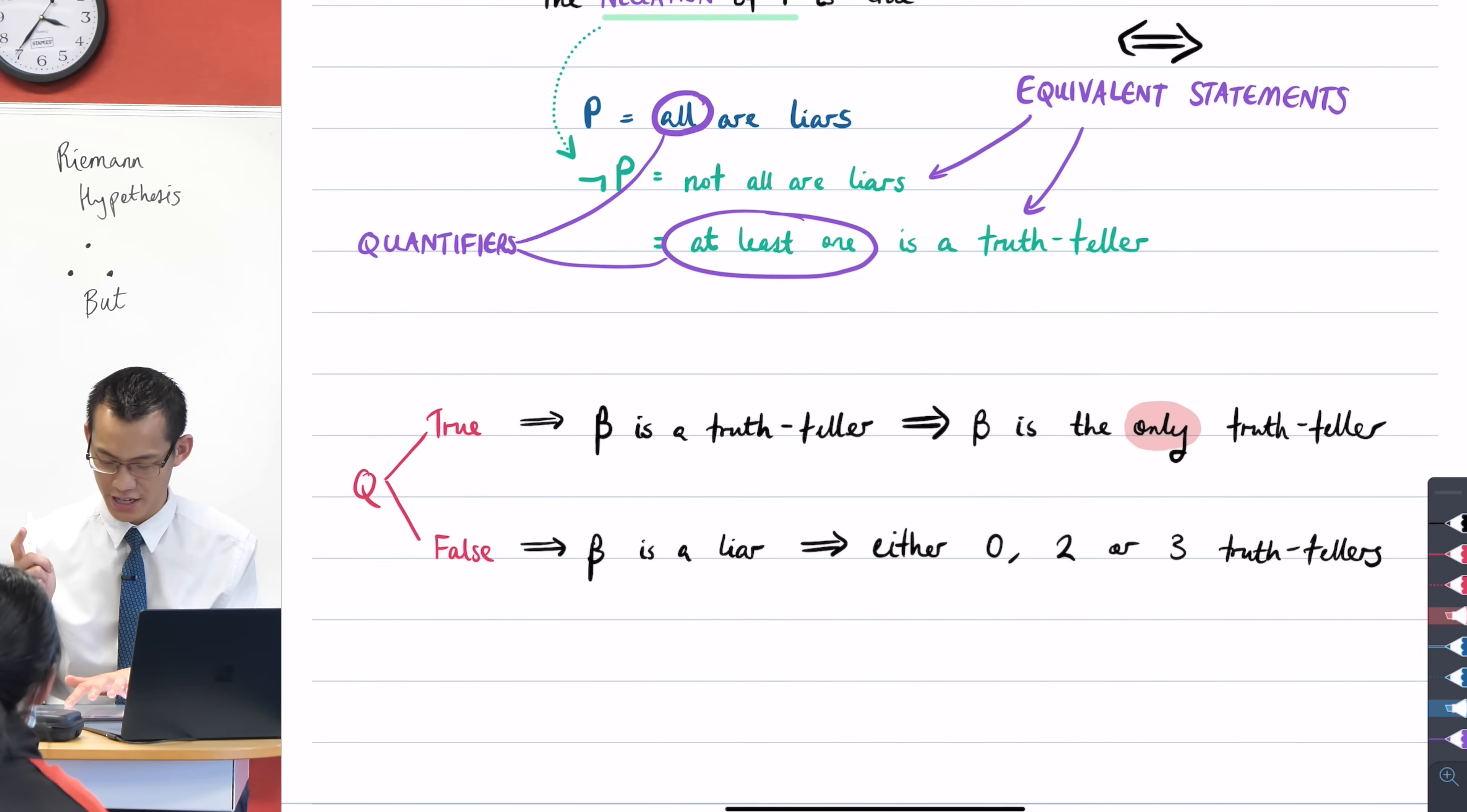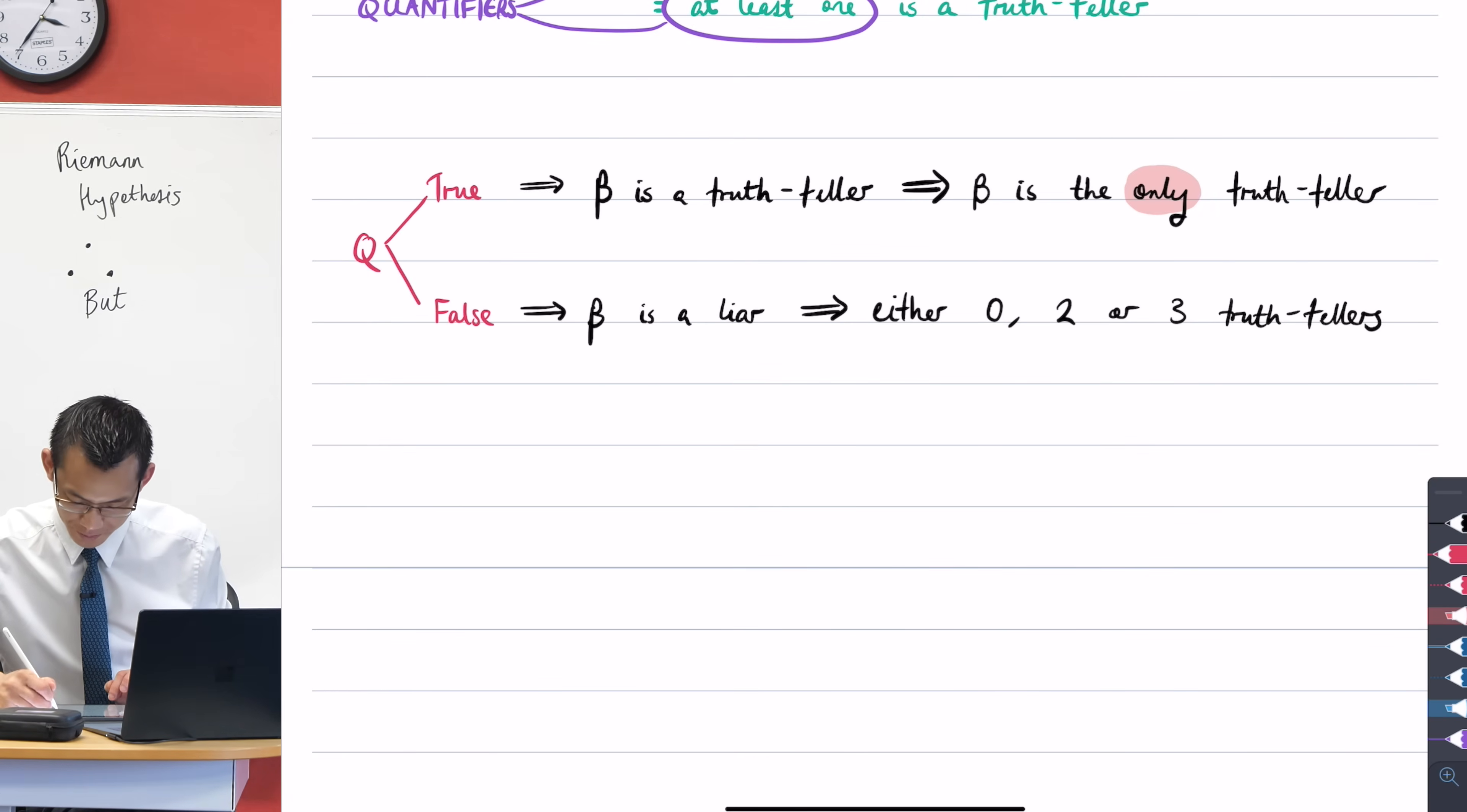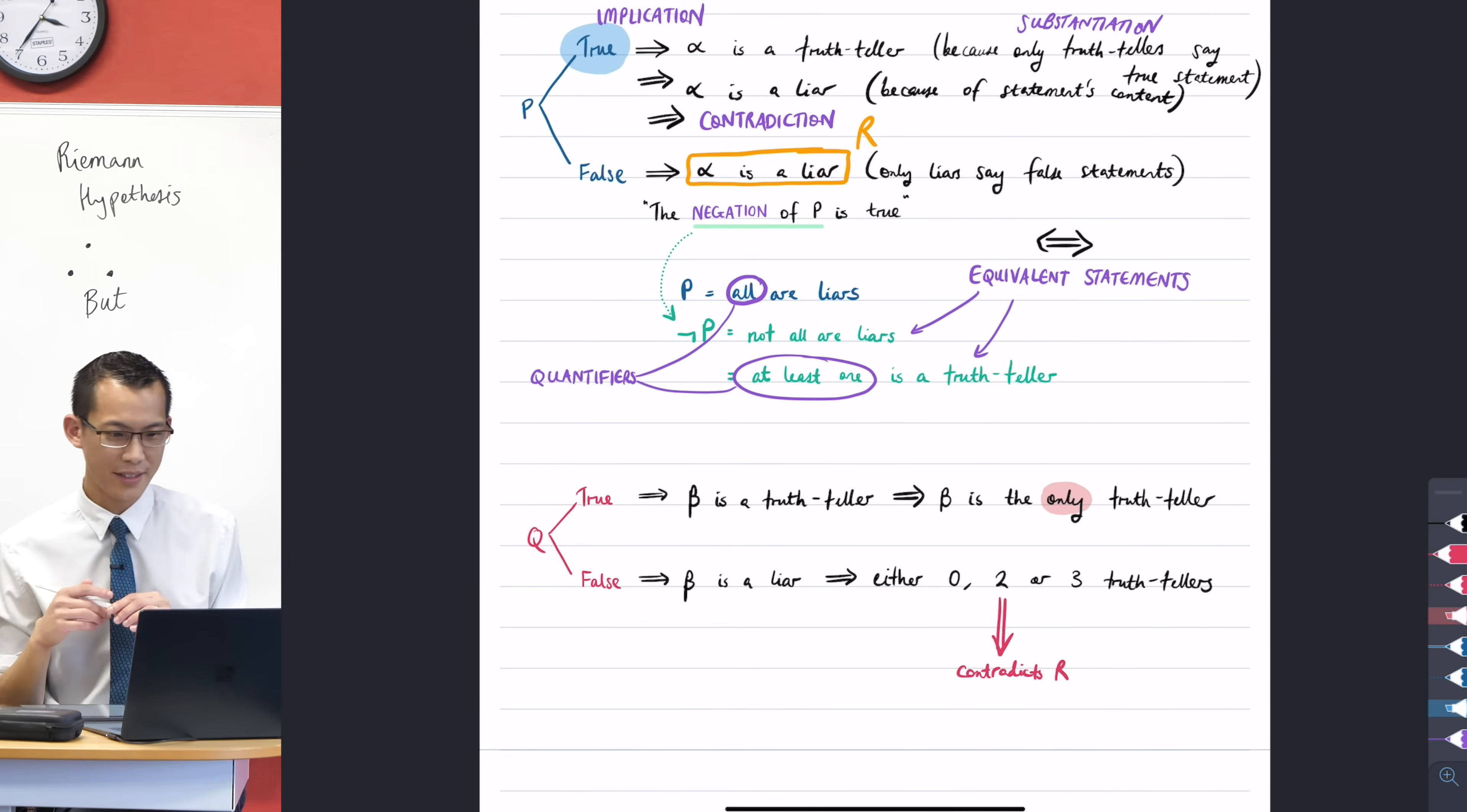This can't possibly be true, it contradicts R. Because they said alpha's a liar, and that means that they can't possibly be two at the same time.